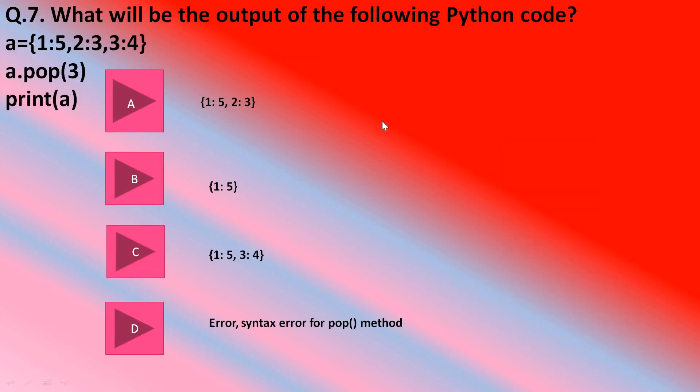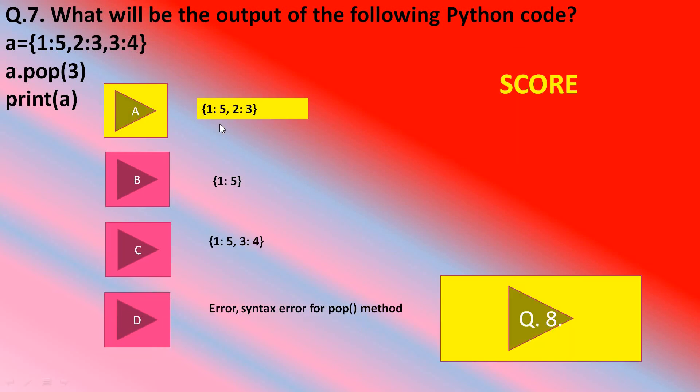Now question number 7. What will be the output of the following Python code: A equals 1 colon 5, 2 colon 3, 3 colon 4. A dot pop 3, print A. Four options: 1 colon 5, 2 colon 3; 1 colon 5; 1 colon 5, 3 colon 4; or error. Is there a syntax error in the pop method? Do you find any syntax error? No. A is the correct answer students, 1 colon 5 and 2 colon 3. That is the correct answer.